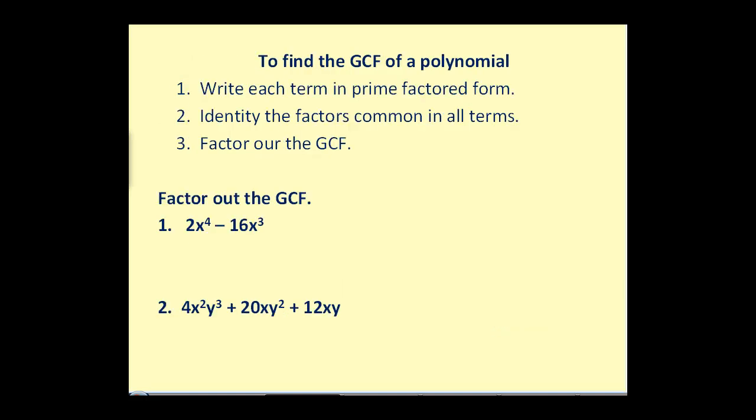So the process to find the GCF of a polynomial will be: number 1, write each term in prime factored form. Step 2, identify the factors common in all terms. And step 3, factor out the GCF. Now, if you know your multiplication tables really well, you may be able to skip this first step, but I will show it for these examples.